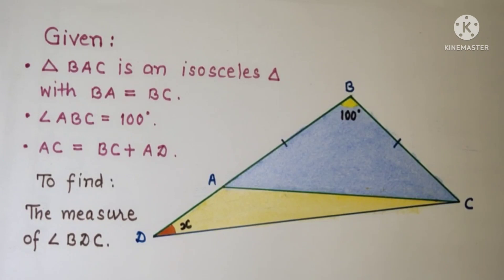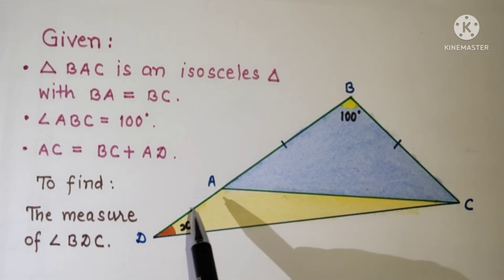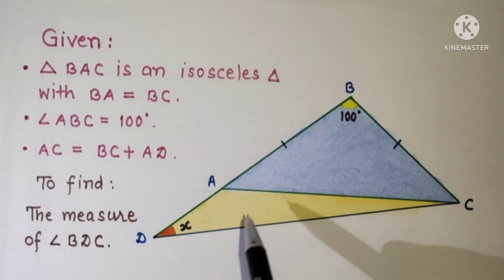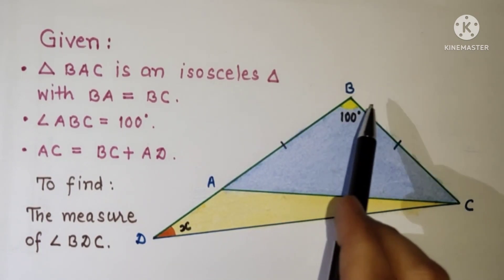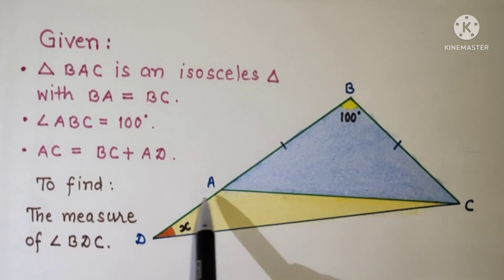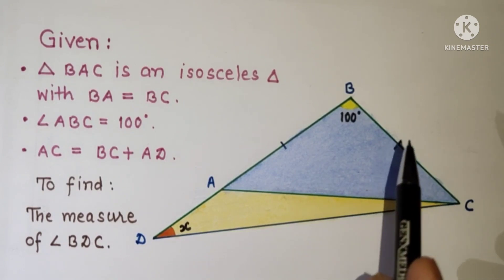Hello everyone, welcome. I have taken this problem from a geometry site. This question looks simple but if you try yourself you will see how challenging it is. In the diagram, triangle ABC is an isosceles triangle with BA equal to BC, angle ABC equal to 100 degrees, and AC is equal to the sum of BC and AD. We have to find the value of angle X.